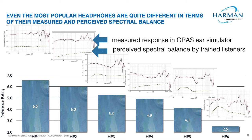We surveyed listeners and found that half said HP4 had a lot of bass while the other half said it sounded very thin. It turned out this was related to how the headphone coupled to their heads — how well it sealed and how much bass leakage there was. Depending on whether it gave a good seal, the headphone sounded very different. Early on we learned that getting a good seal and controlling for that variable is critical if you want consistent subjective measurements that correlate with acoustic measurements.